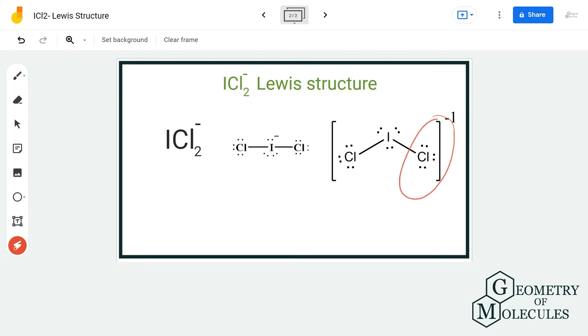Do not forget to put brackets around it and mention its charge, because whenever you are drawing a Lewis structure for an anion, make sure that you are placing brackets and mentioning its charge.